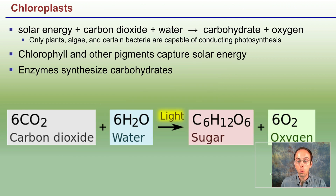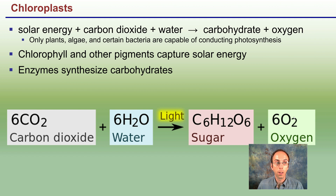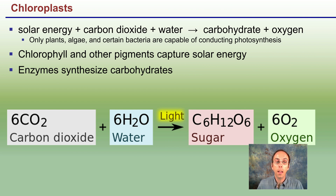Chloroplasts carry out the photosynthetic process, taking carbon dioxide and water with light energy and producing sugars and oxygen as a byproduct. Only plants, algae, and certain bacteria are capable of going through this process. Chlorophyll and other pigments capture solar energy, and enzymes are ultimately used to synthesize carbohydrates or sugars.